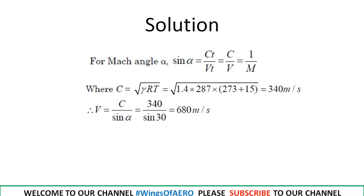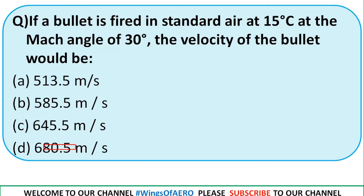Substituting γ = 1.4, R = 287, and T = 273 + 15 = 288 K, we get C ≈ 340 m/s. Then using M = V/C, we get V = C × (1/sin α). Substituting the values gives V = 680 m/s. So the right option is option D.